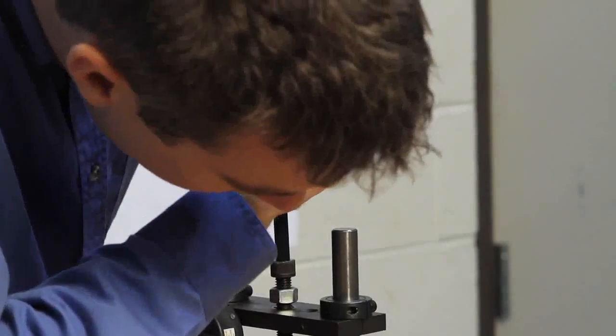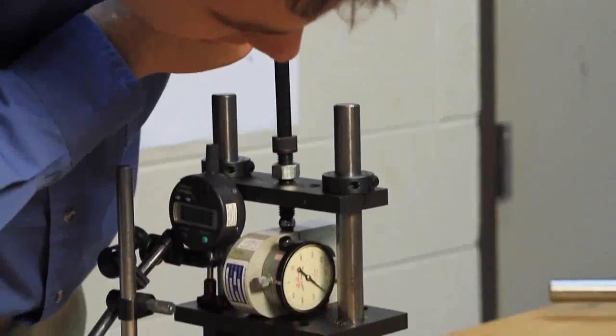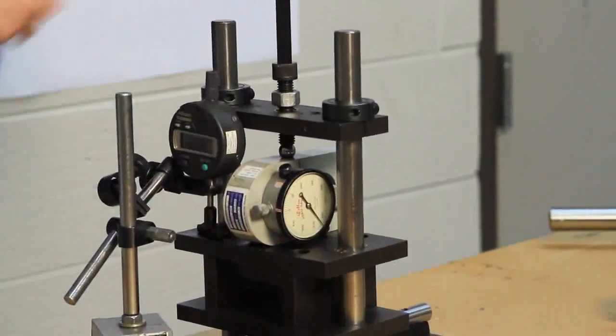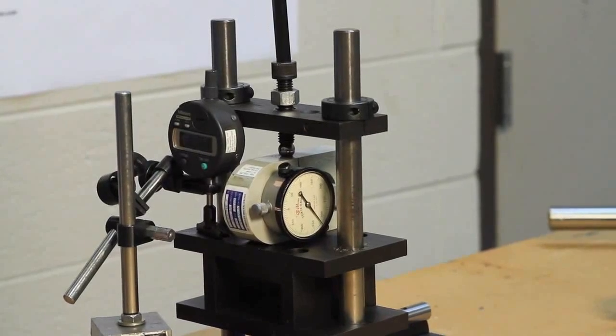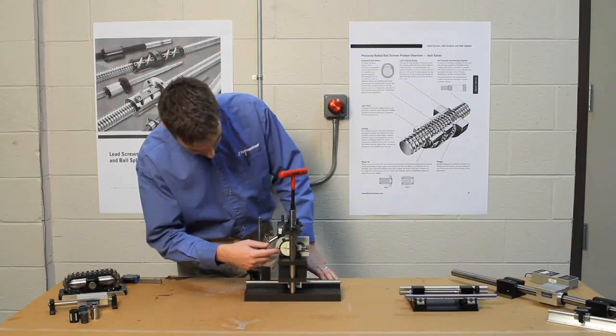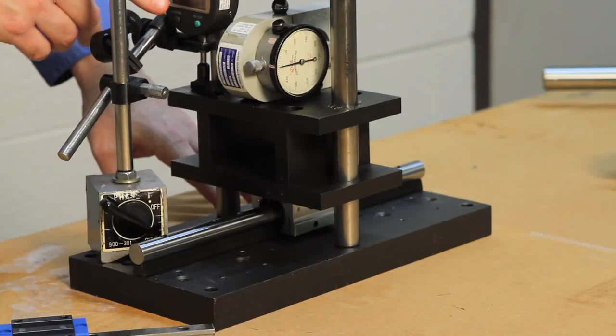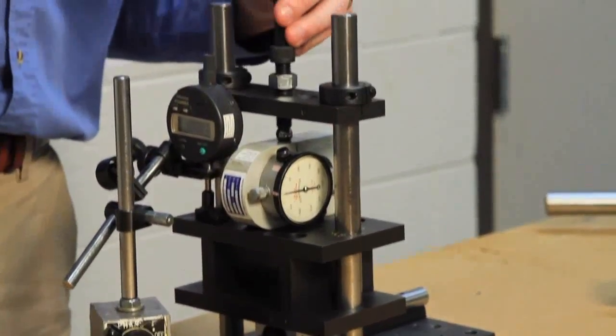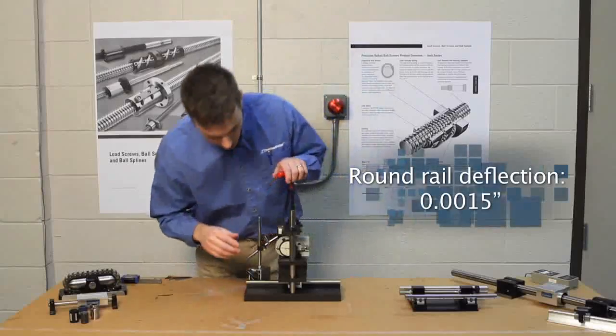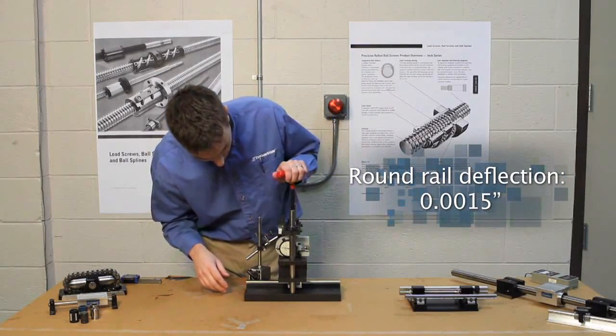We're actually going to torque down on this force gauge, which is going to apply load to the rail. We can see how much load we're applying here on the gauge and then we're going to read on this indicator on the side how much the entire unit is deflecting. So we're going to load it up to 320 pounds.